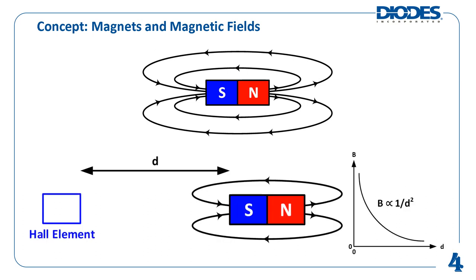Inside Hall Effect Sensor devices, there is a small active area that detects the magnetic flux density. This active area is called the Hall element. Magnetic flux density, given the symbol of an uppercase B, is approximately proportional to the inverse square of the distance, lowercase d, between the Hall element and the magnet. In other words, magnetic flux density is strongest at the poles of a magnet but falls off quickly with increased distance. This means that magnetic sensing is really only effective at short distances.